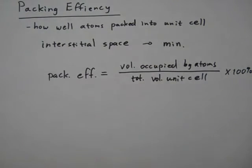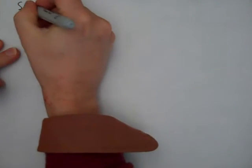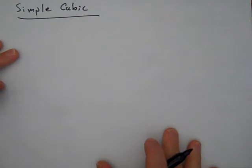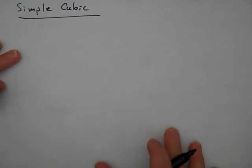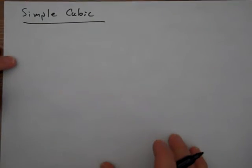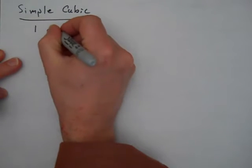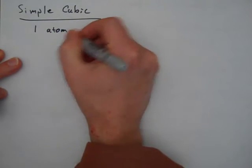So we multiply by 100 to convert this number into an efficiency. So let's think about how we might calculate a packing efficiency for some of the cubic structures that we've been studying about. So let's look at simple cubic.